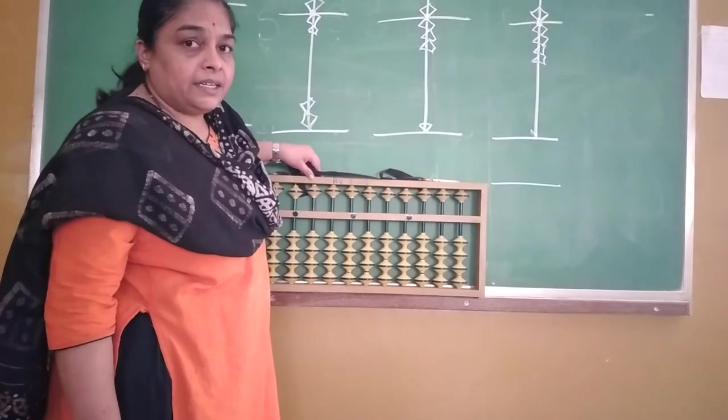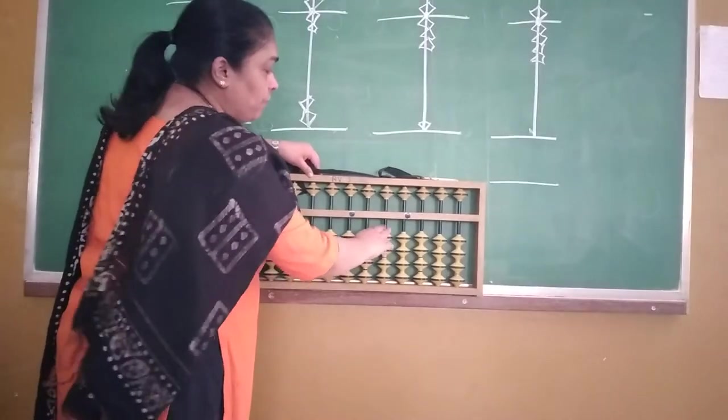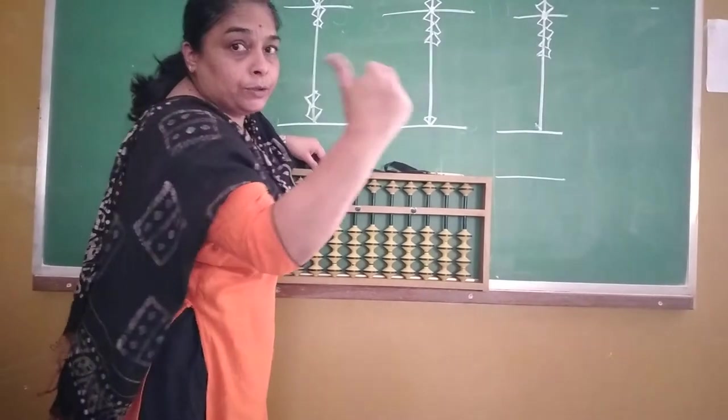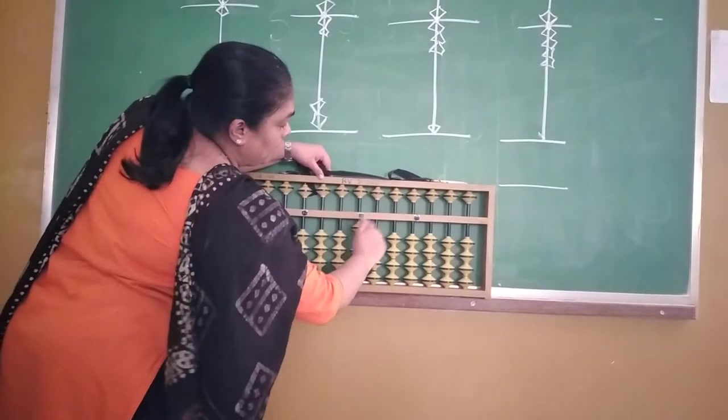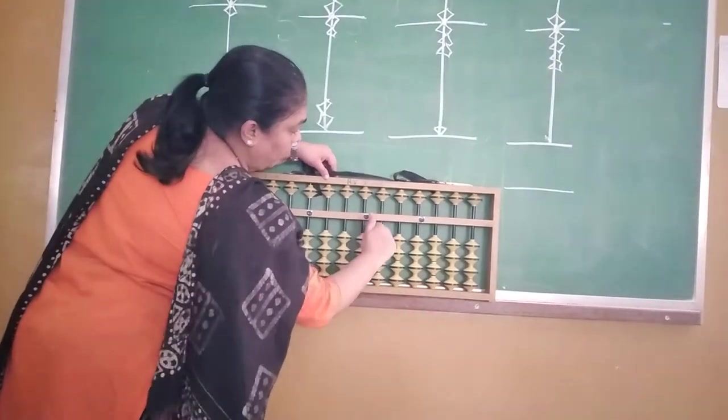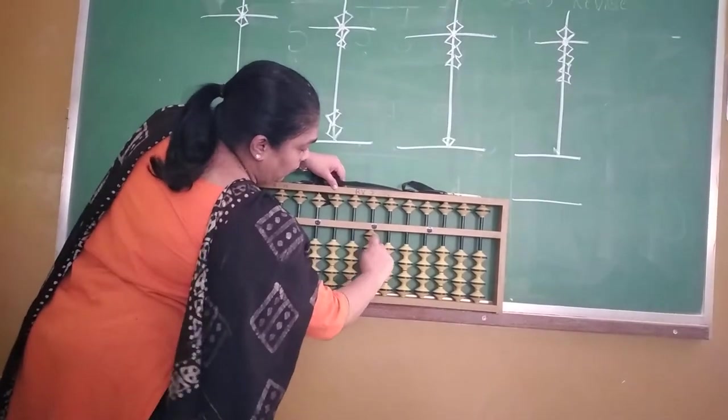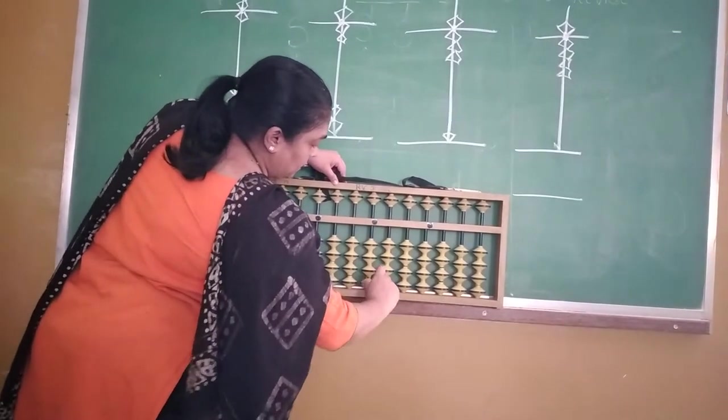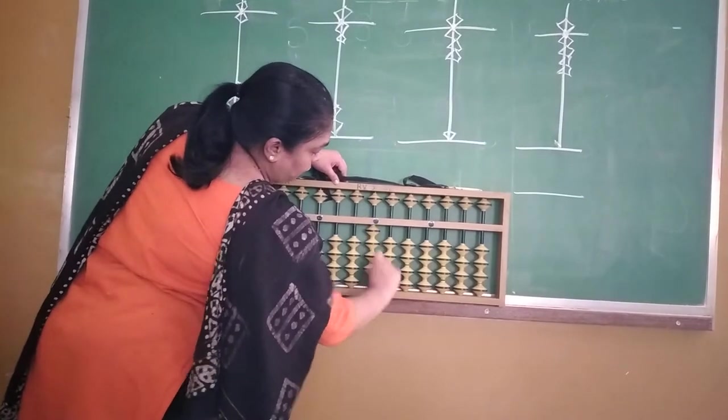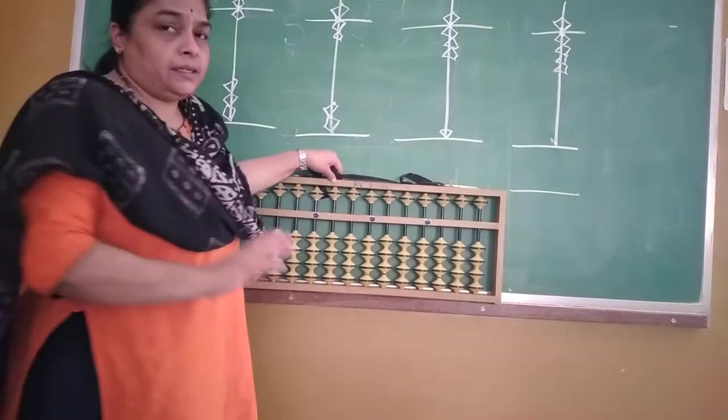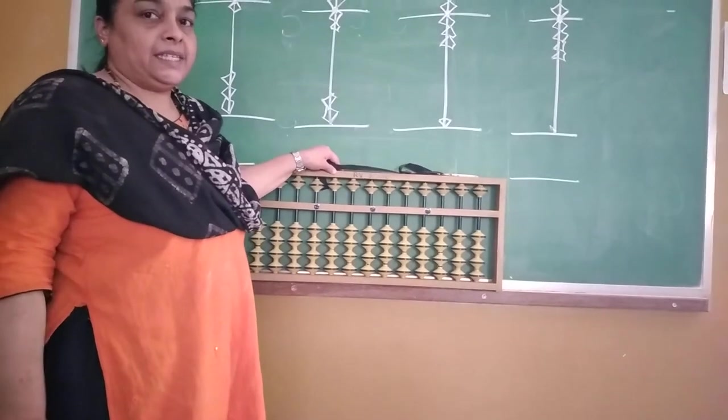Right children? So first when I say one, you have to use your thumb finger. One, minus one, one, minus one. Two, minus two, two, minus two. Three, minus three, three, minus three. Four, minus four, four, minus four. So this you have learned in the previous class. Right children?